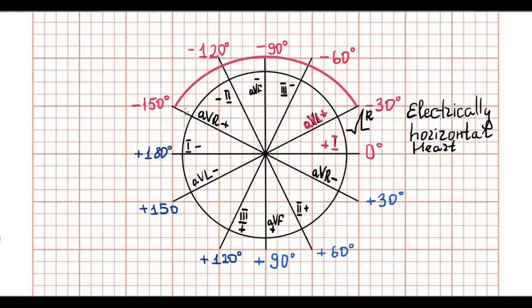An axis of minus 30 degrees or more negative is described as left axis deviation.